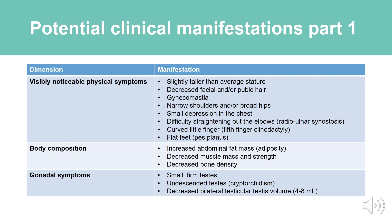These are a list of clinical manifestations that potentially can help diagnose Klinefelter patients. Visibly noticeable physical symptoms include a slightly taller than average stature, decreased facial and/or pubic hair, gynecomastia, narrow shoulders and/or broad hips, small depression in the chest, difficulty straightening out the elbows, radio-ulnar synostosis, curved little finger (fifth finger), clinodactyly, and flat feet (pes planus).